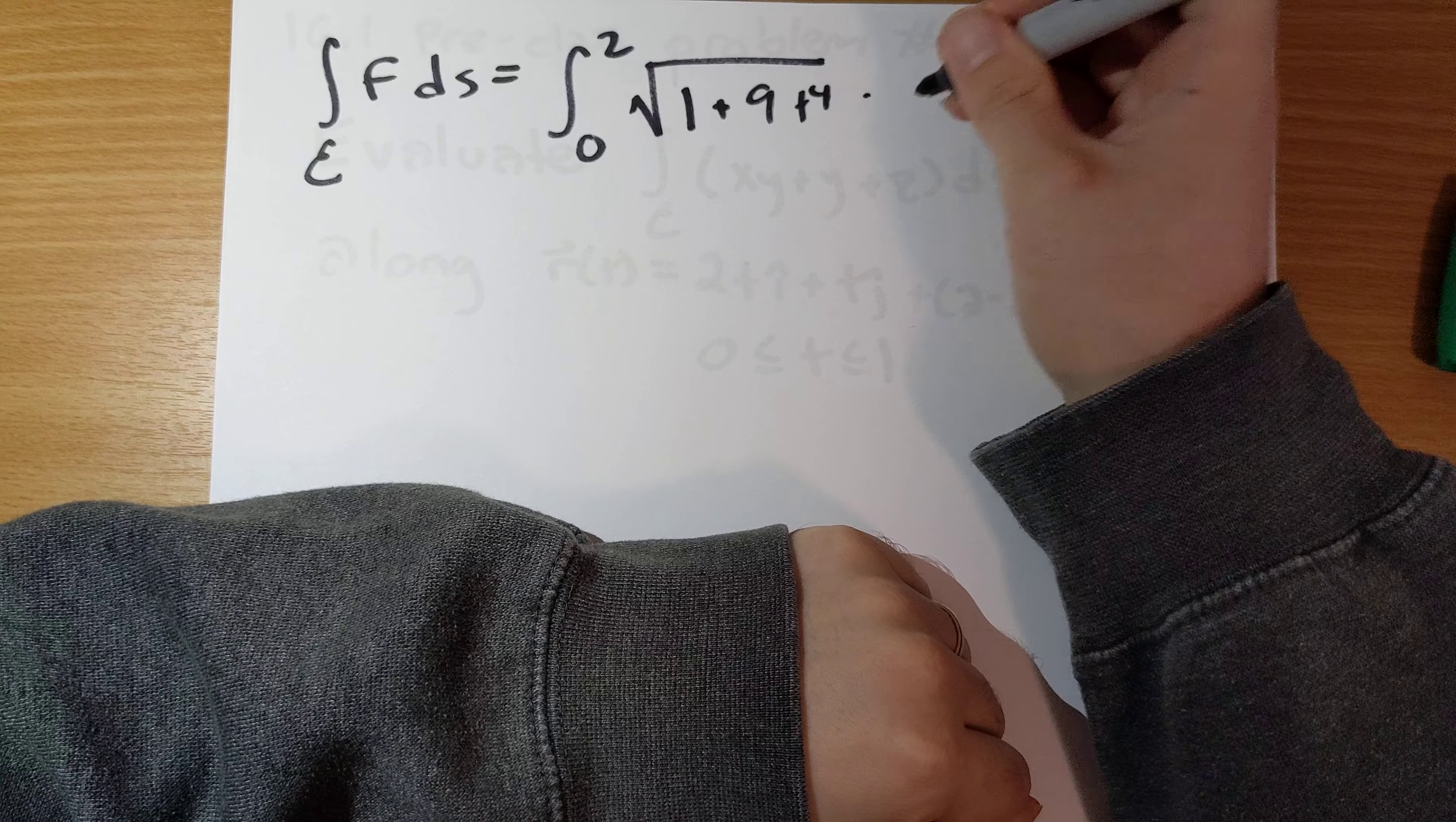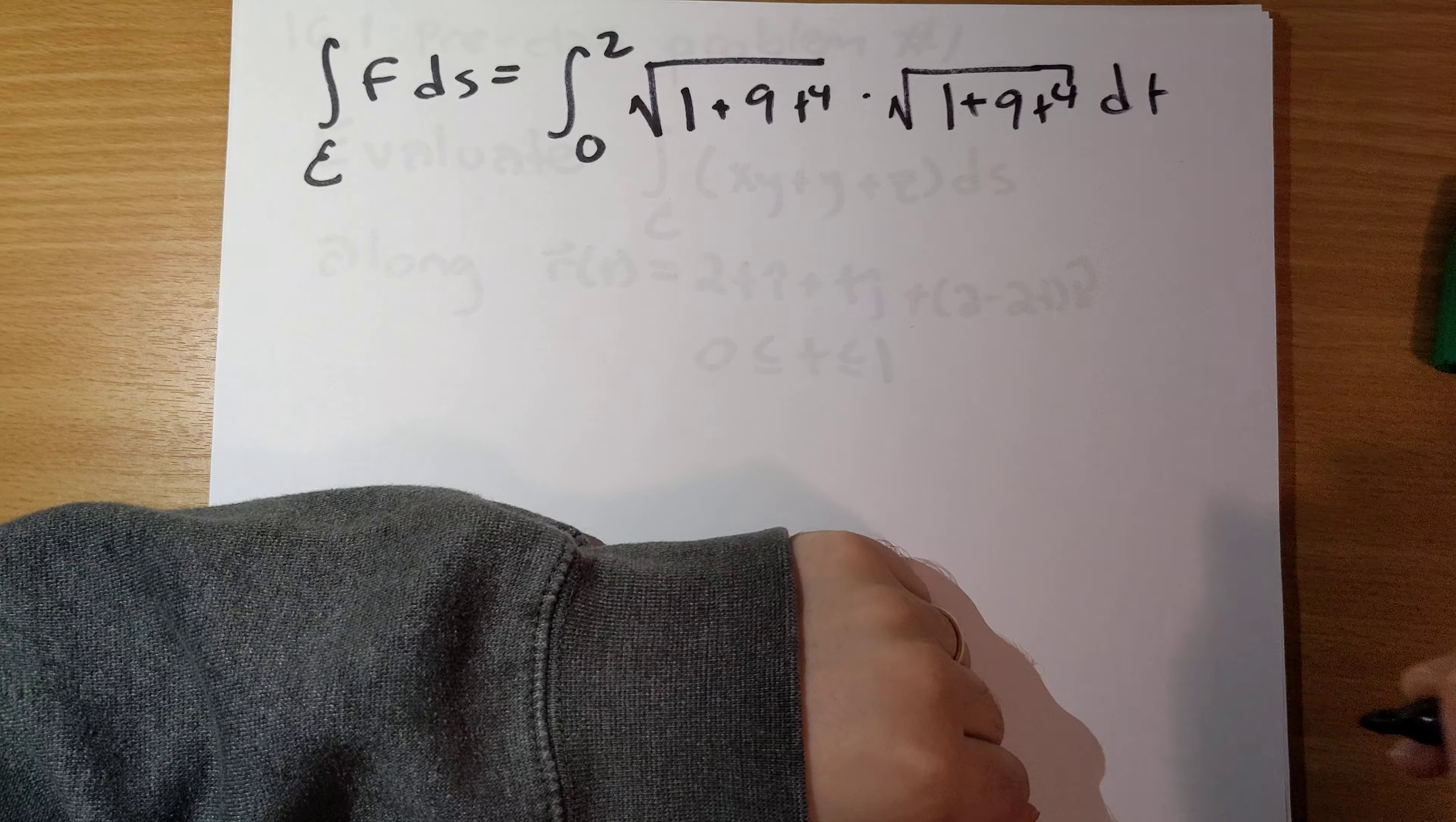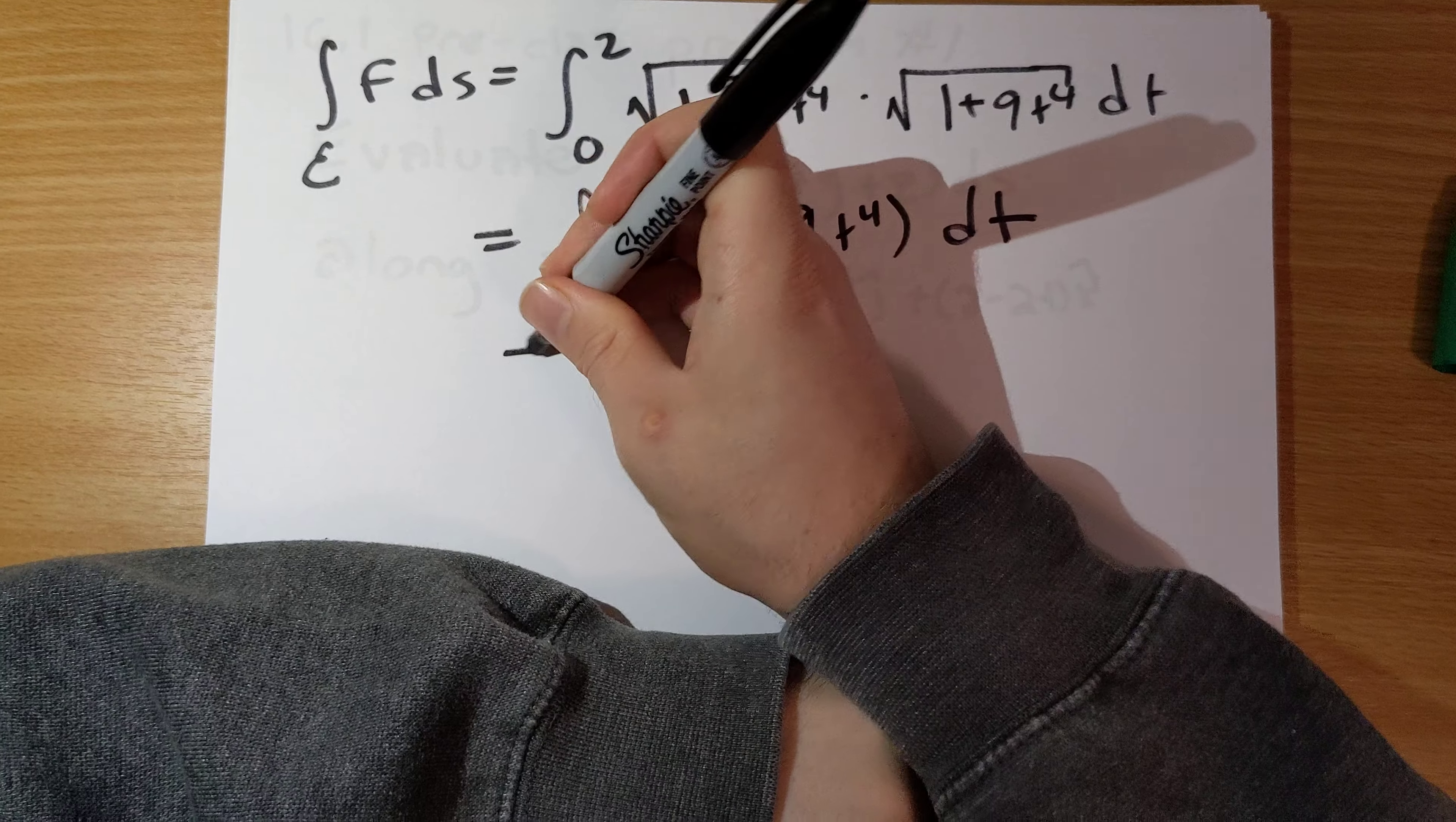when we say the integral over c of f ds, it's the integral of t runs from 0 to 2. That's our bounds on t. f of r of t is 1 plus 9t to the fourth. The magnitude of r prime of t is also the square root of 1 plus 9t to the fourth.